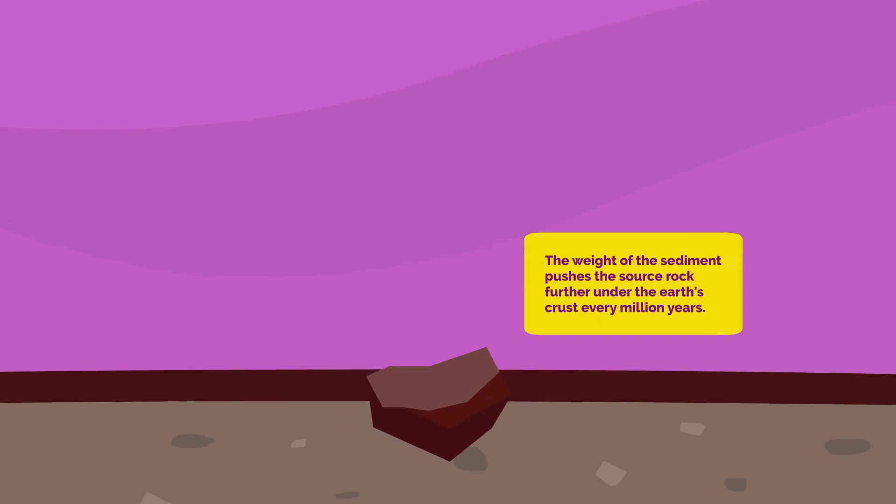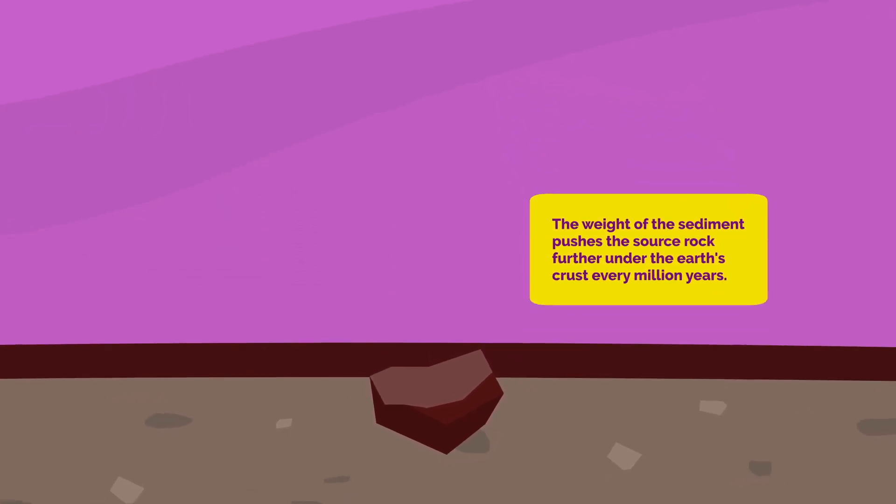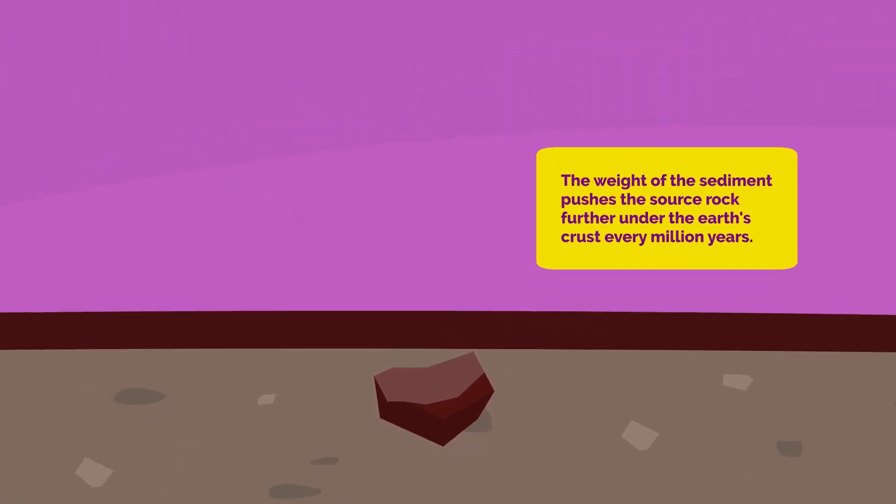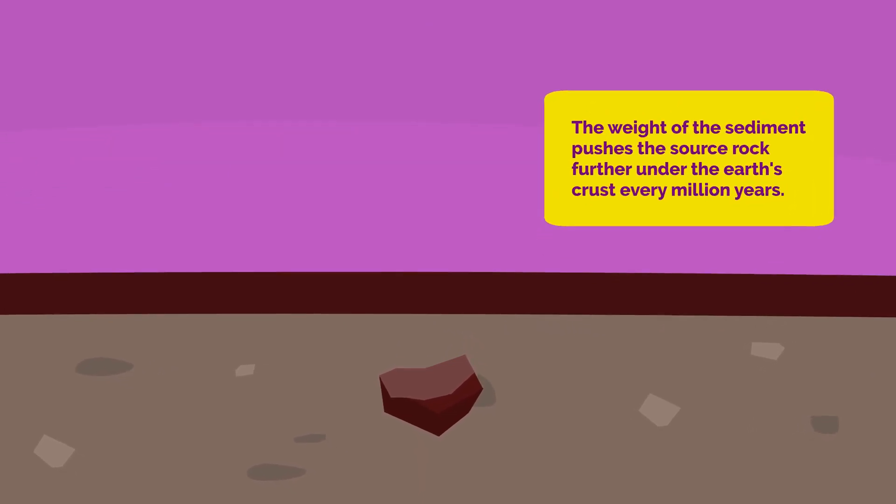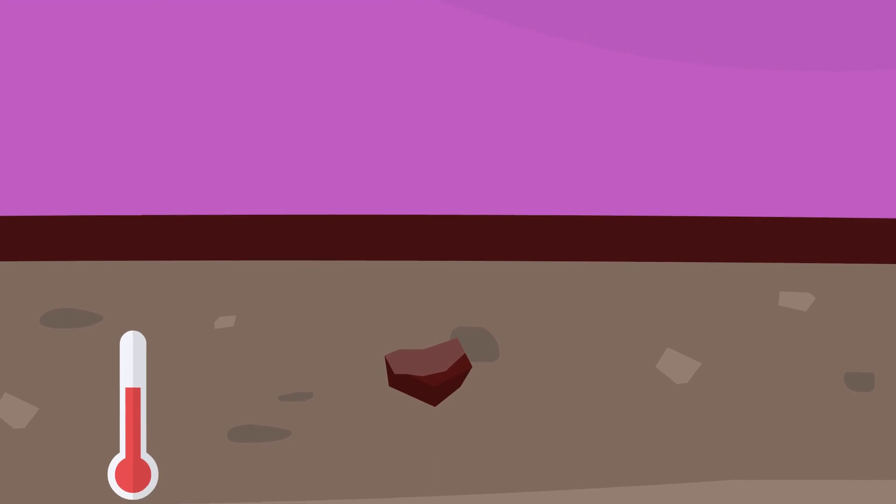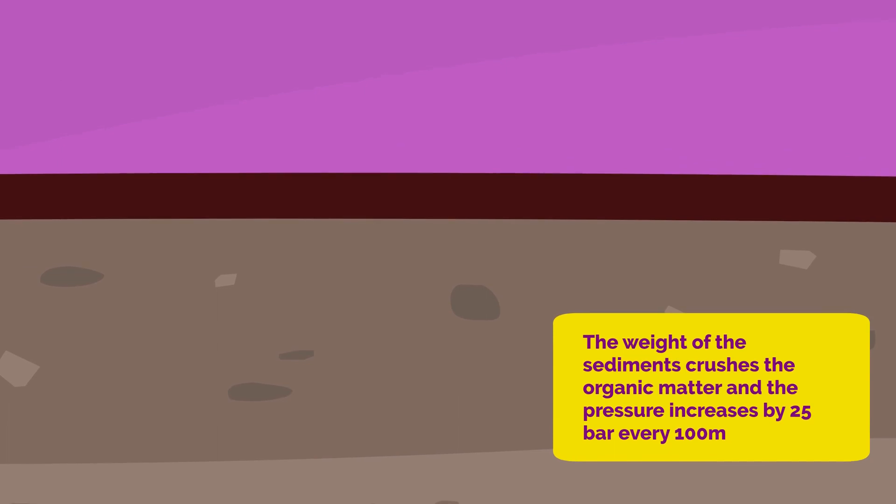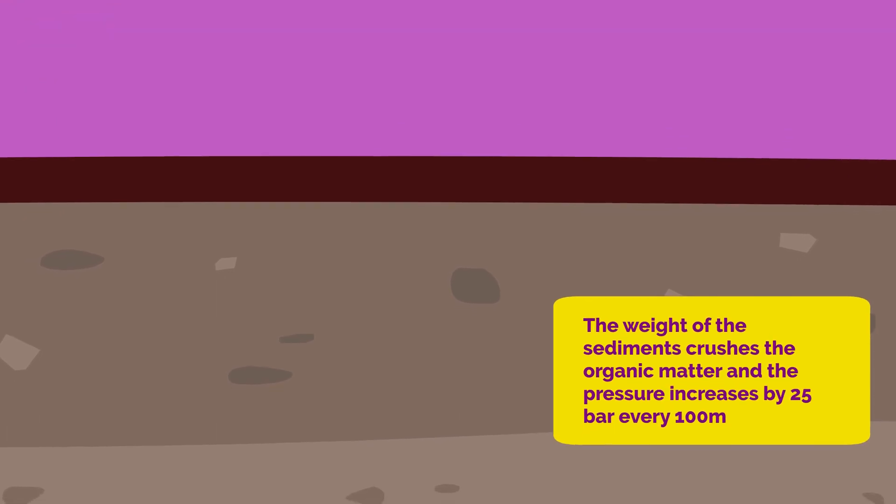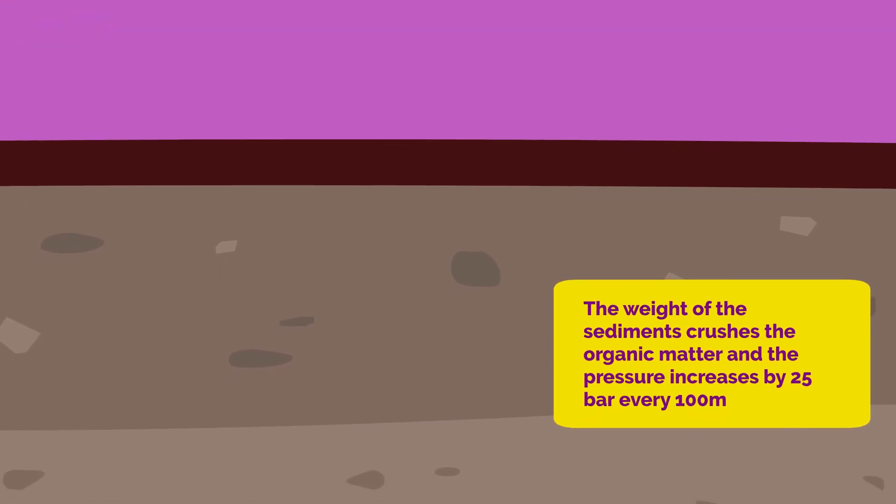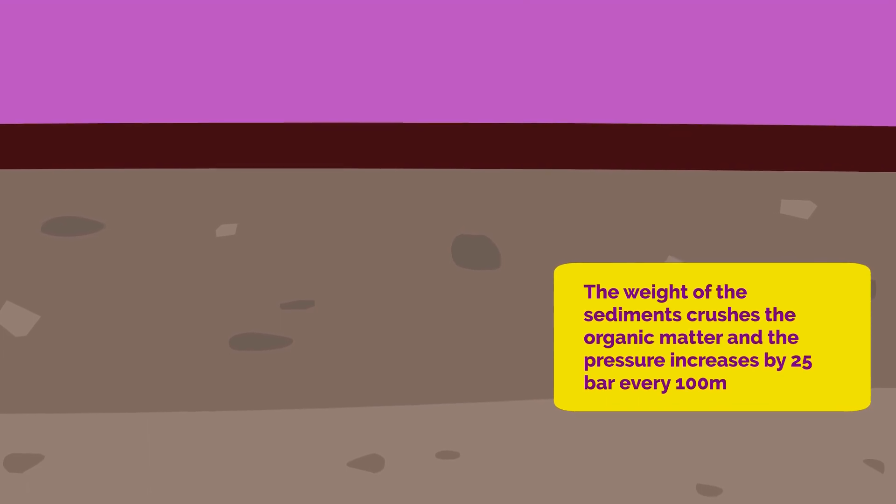The weight of the accumulating sediment very slowly pushes the source rock further under the earth's crust by a few meters to a few hundred meters every million years or so. As it sinks below the ground, the source rock is subjected to increasingly high temperatures. The weight of the accumulating sediment crushes the organic matter that makes up the rock, and the pressure increases by 25 bar every 100 meters on average.